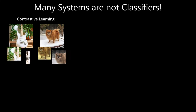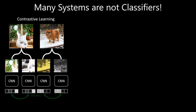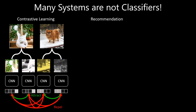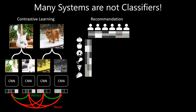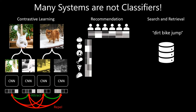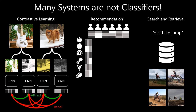Many of today's modern systems don't fall into the standard categories of classification and regression. Instead, systems like contrastive learning, product recommendation, and image retrieval focus on learning distances between pieces of data to perform tasks and solve problems.